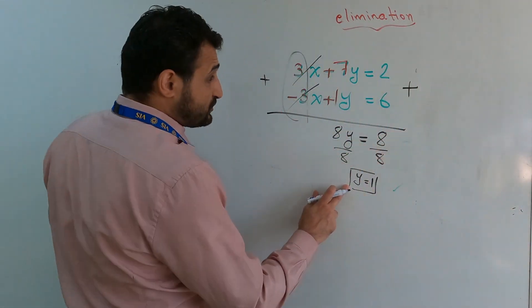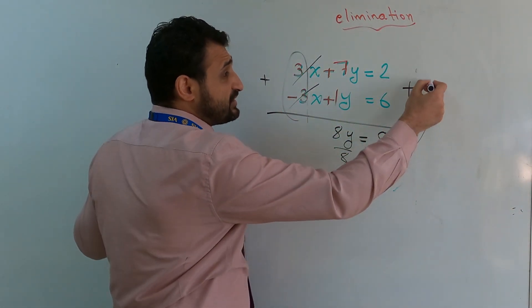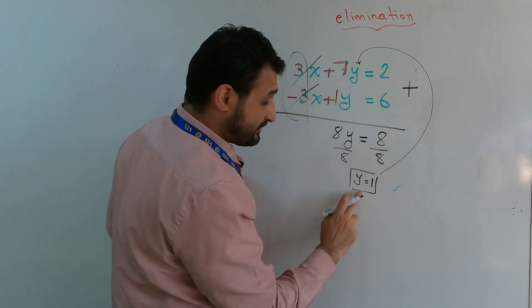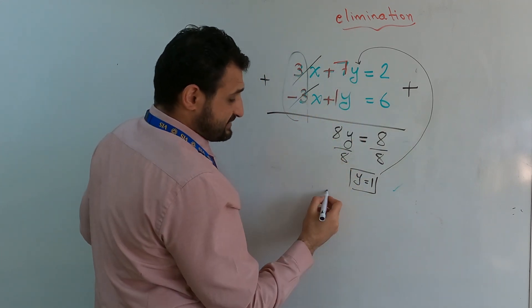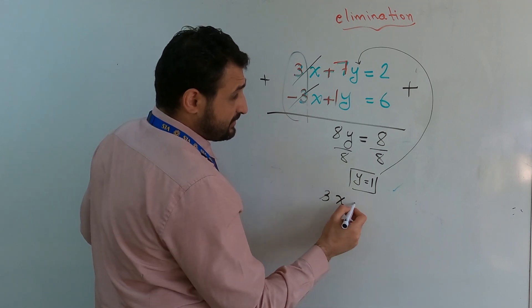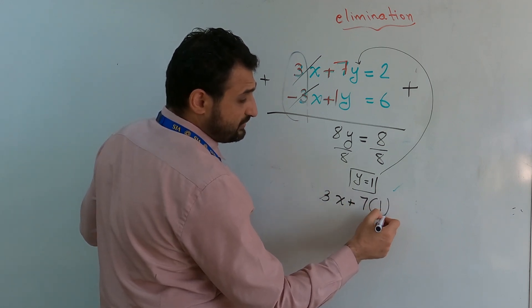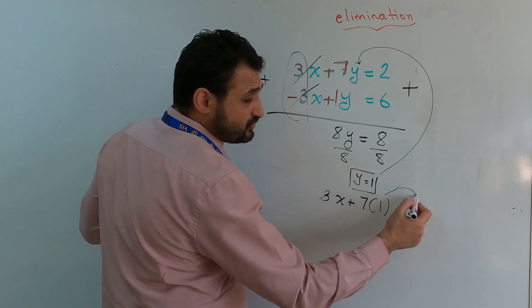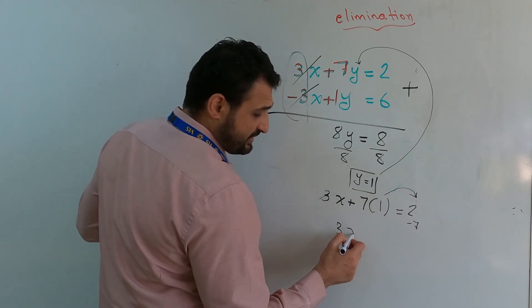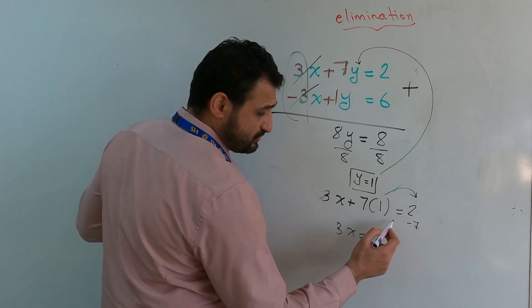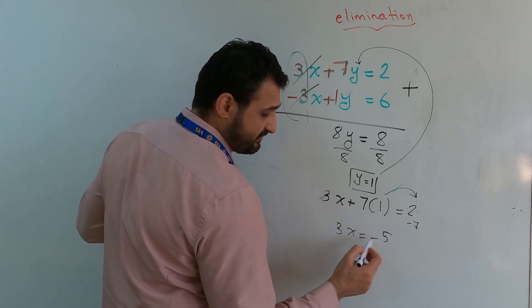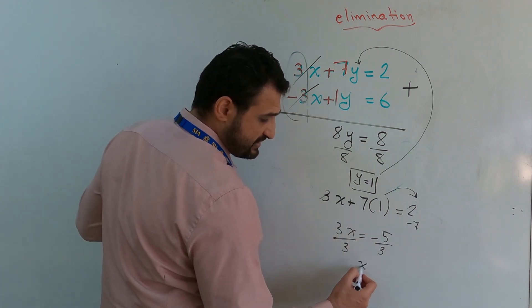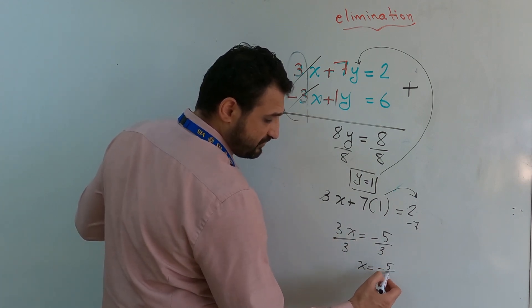Since you got y now, substitute it in one of the equations. Let's say the first one. Whenever you see y, put 1 and write it as it is. 3x plus 7 times 1 equals 2. 7 times 1 is 7. Move it to the other side, it will be minus 7. So 3x equals 2 minus 7, negative 5. Divide both sides by 3, so x will be negative 5 over 3.